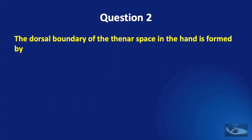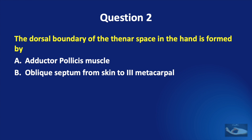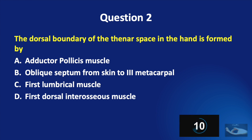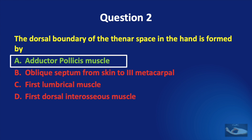Question number 2. The dorsal boundary of the thenar space in the hand is formed by: adductor pollicis muscle, oblique septum from the skin to the third metacarpal, the first lumbrical muscle, or first dorsal interosseous muscle. The answer is A, adductor pollicis muscle.